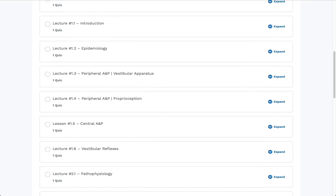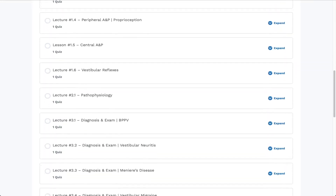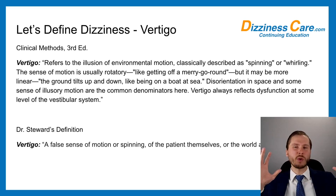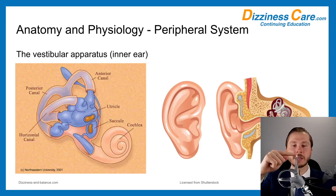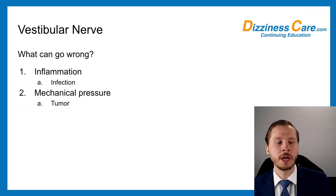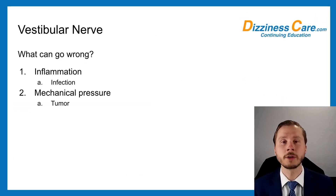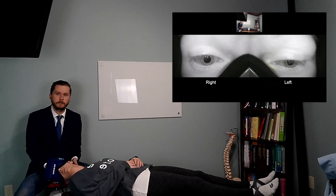The first course we are releasing is Chiropractic Case Management of the Dizziness Patient. We begin with the etiology and the prevalence, as well as definitions, and then we work our way through anatomy, physiology, and reflexes, and then we develop a comprehensive thought process on how to help these patients, and then work our way into treatment. Live examination and treatment examples are presented.